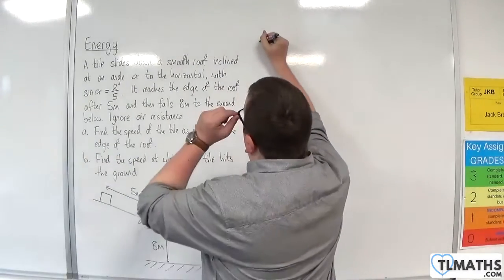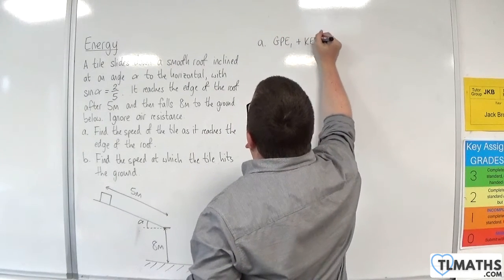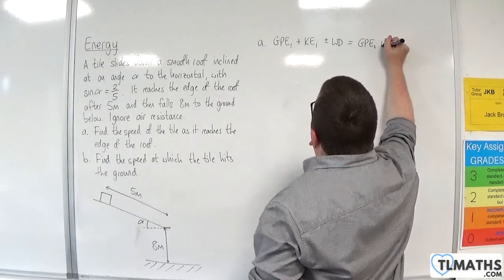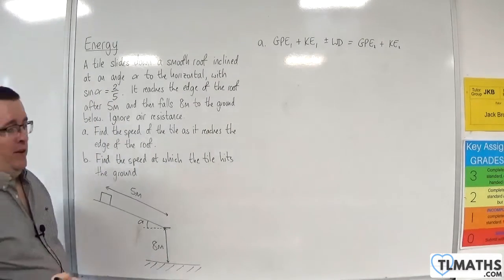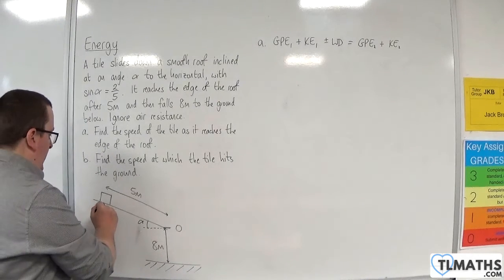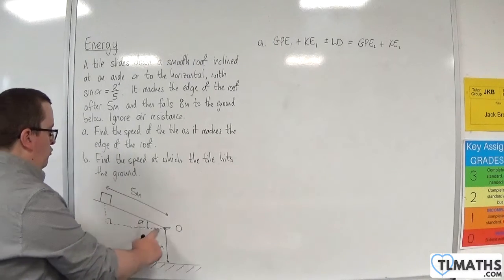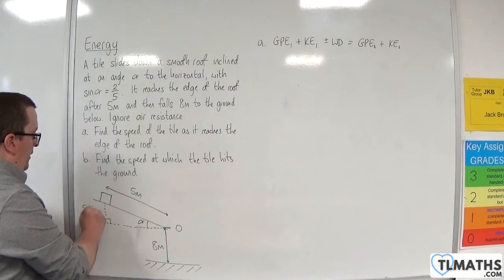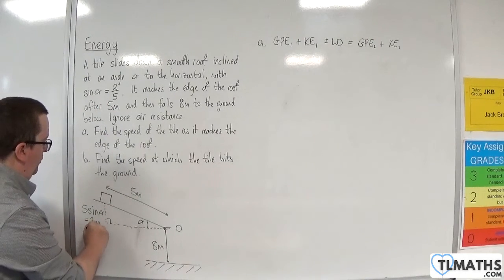So I'm going to go straight in to the work energy principle. The initial gravitational potential energy plus the initial kinetic energy plus or minus the work done is equal to the gravitational potential energy final plus the final kinetic energy. So what I need is the initial gravitational potential energy. And because I'm taking that as zero, as that is ground zero, what I need is this height here. Now, if I draw that right-angled triangle, then I know that that height has to be five sine alpha. And in the question, I'm told sine alpha is two-fifths, so that means it's two metres tall.